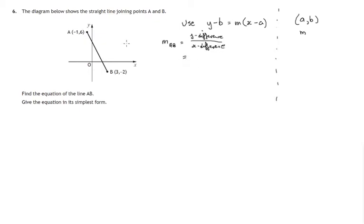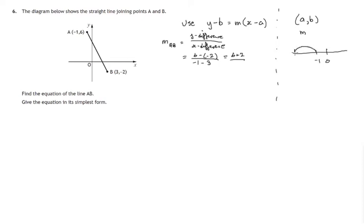We look at the difference between the two y coordinates: 6 minus negative 2. And if you started with point A for the y difference, you also have to start with point A for the x difference, so that's negative 1 minus 3. Now, 6 minus negative 2 is the same as 6 plus 2, and the denominator is negative 1 minus 3. Thinking of number lines, we're at minus 1 and we move 3 to the left, which gives us minus 4.